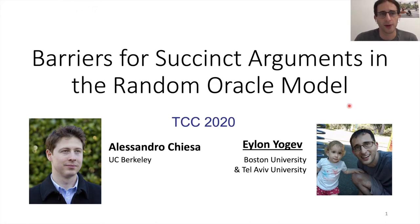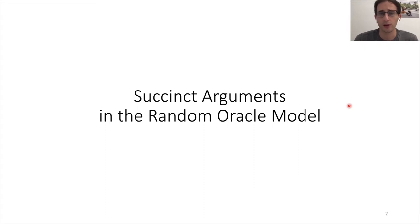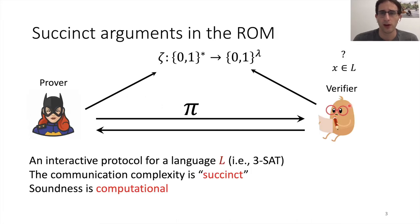Hey everyone. This talk is about barriers for succinct arguments in the random oracle model. My name is Alonio Gevin. This is joint work with Alessandro Chiesa. Let me start with an informal overview of succinct arguments in this model. So here we have a prover, we have a verifier and they communicate in an interactive protocol to decide if X is in the language. They both have access to a shared common resource and this is a truly random function.